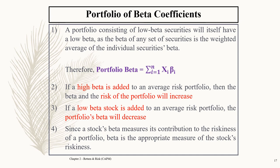For portfolio beta, you usually don't need to calculate individual beta from scratch in tests as it is given. What you need to know is: if a high-beta asset is added to an average-risk portfolio, the beta and risk of the portfolio will increase. Simply put — the higher the beta, the higher the risk in the portfolio; the lower the beta, the lower the risk. Beta measures an asset's contribution to the riskiness of the portfolio.